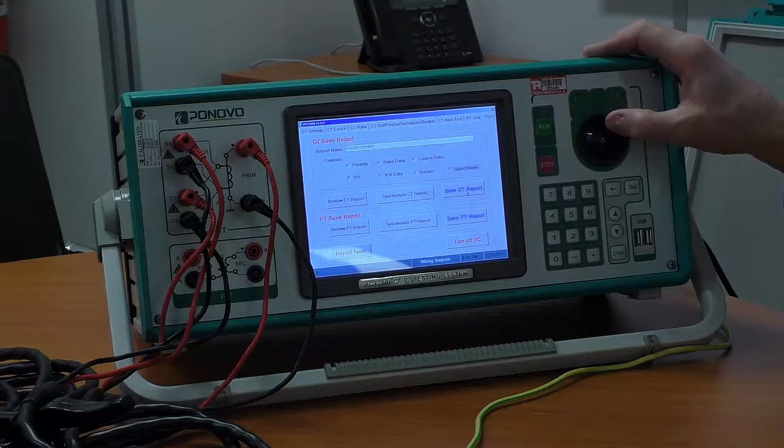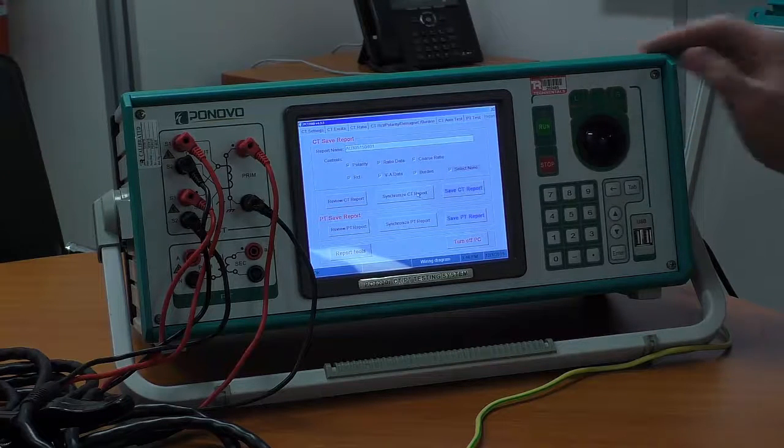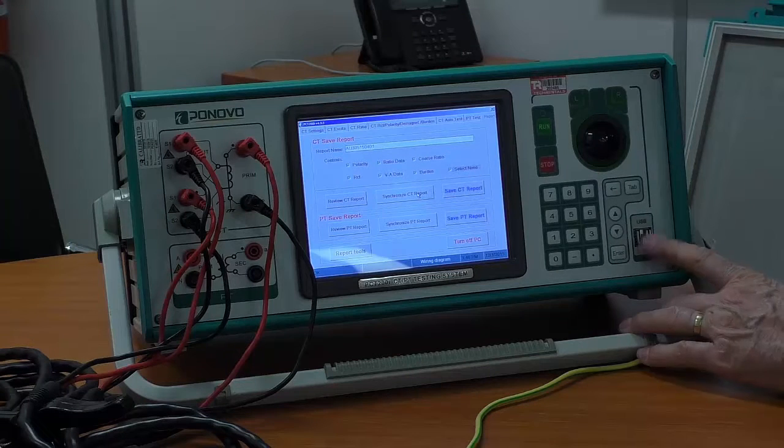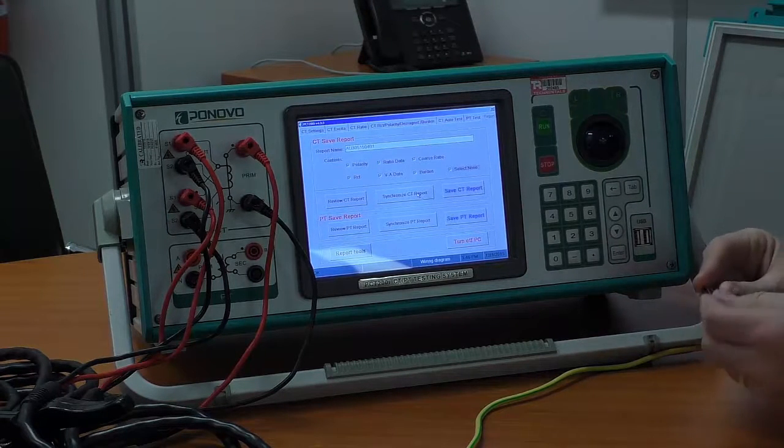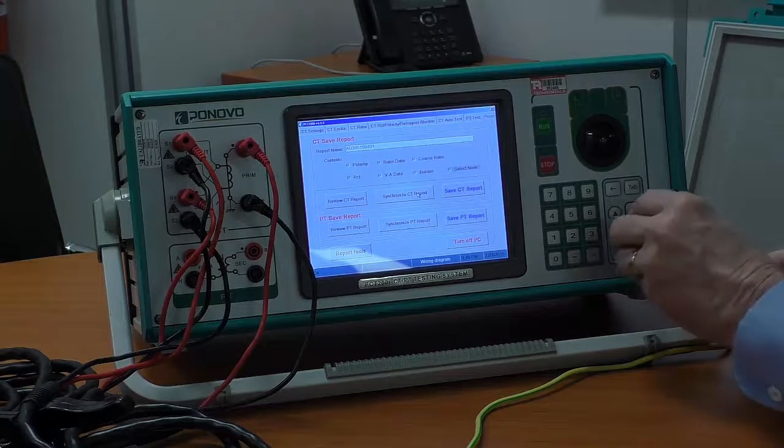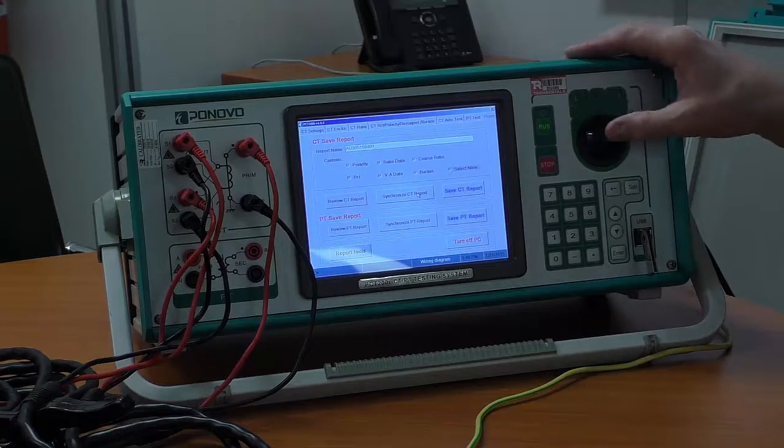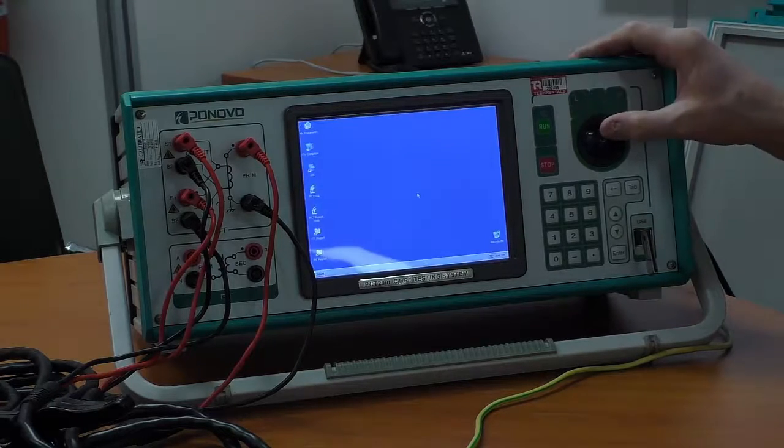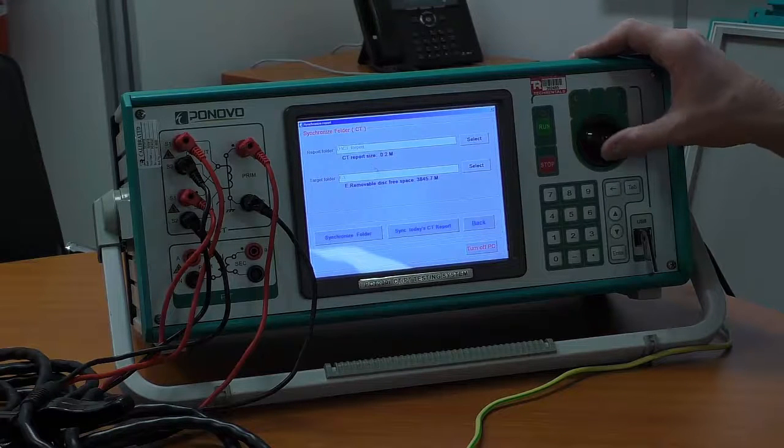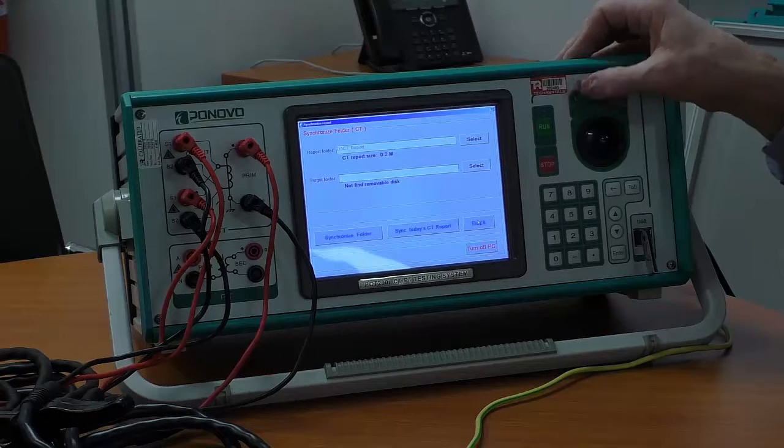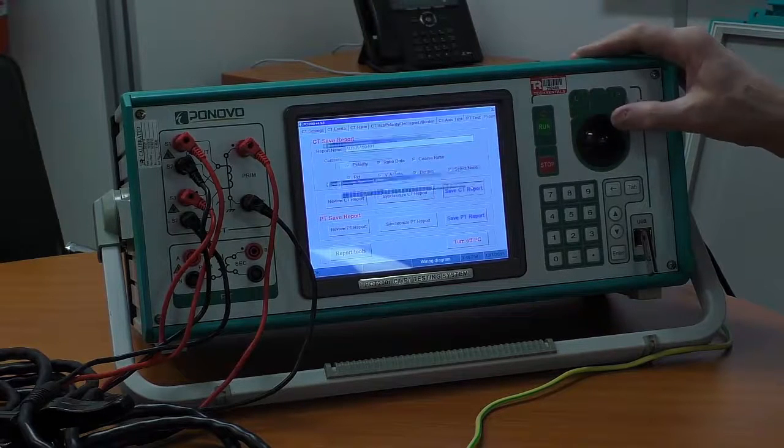Now we can save this as a CT report. We'll save all the detail. And we can synchronize the CT report. That means that we use one of the USB memory sticks here. The USB slots. I plug a USB memory stick into that. Right. And if I click on synchronize the CT report. It will find the drive. Except I haven't, hang on a sec. I need to go back here.